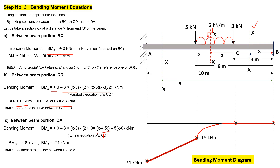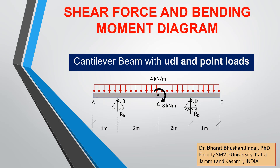This completes the shear force and bending moment diagram for this problem. In the next lecture, we will solve a numerical example of a cantilever beam with UDL as well as a point load, having two cantilever portions D-E and B-A.